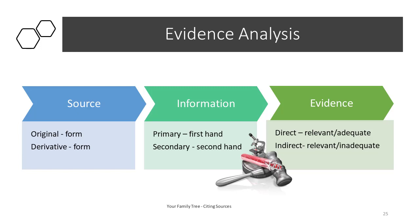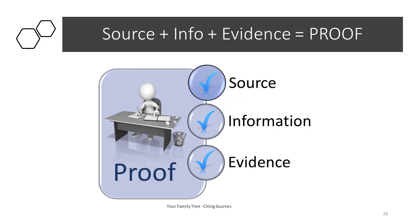So what happens when you put all three together? Source plus information plus evidence equals proof. After careful analysis and evaluation of the associated source, backed by thorough research and documentation, the result is proof — you prove your source. Quality does not rest upon any simple statement of fact; proof should rest upon the total of all evidence. Once you have that proof and you're satisfied with it, you can go ahead and cite your source.